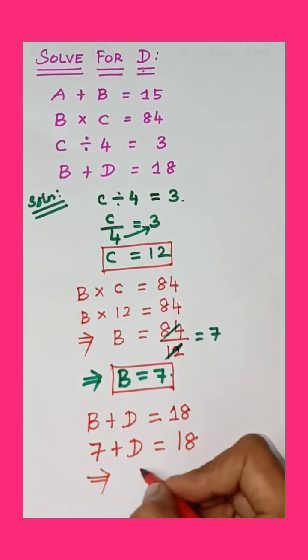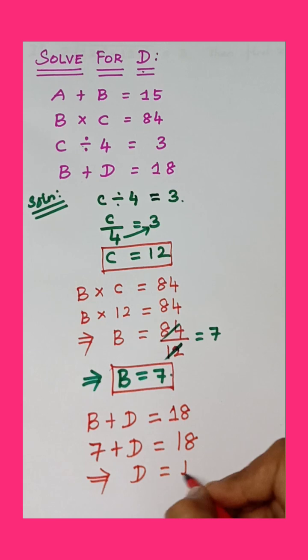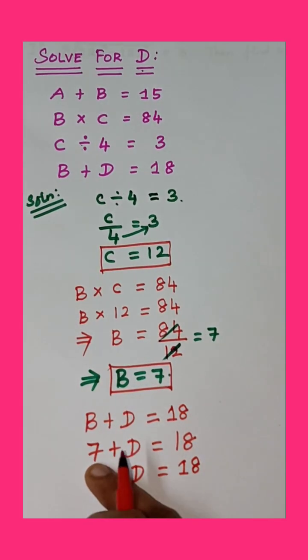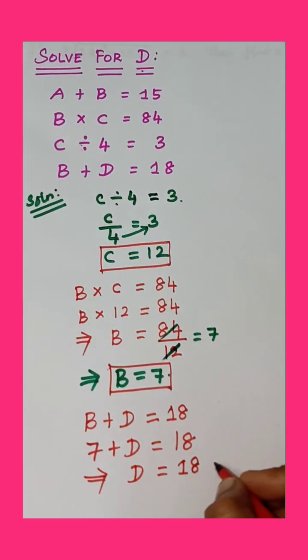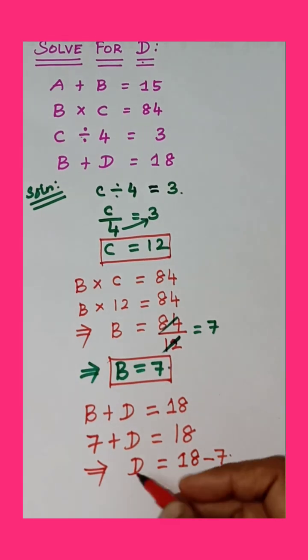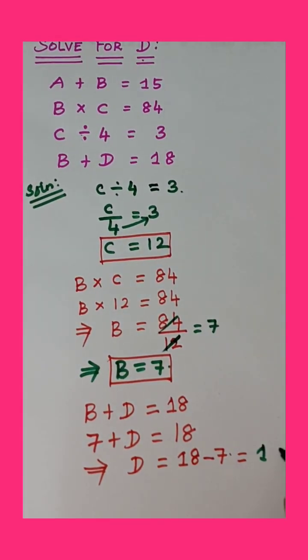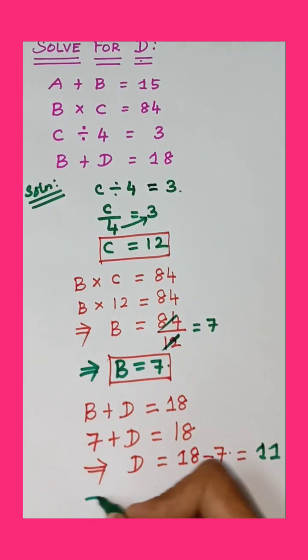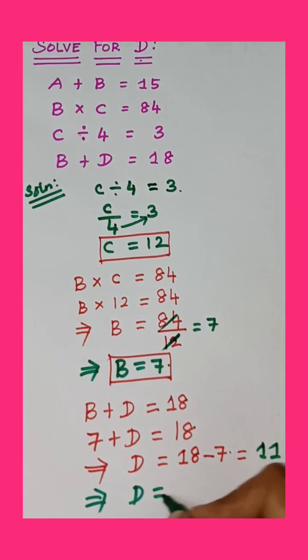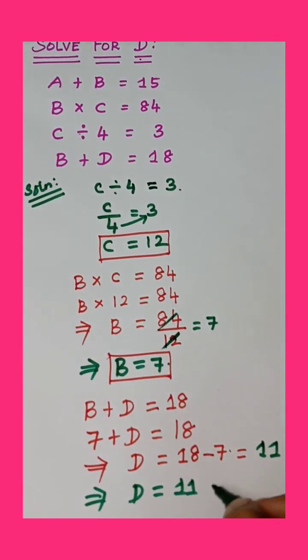D equals 18 minus 7. Plus 7 on left side, right hand side minus 7. D equals 18 minus 7. D equals 11.